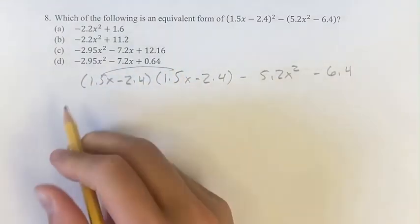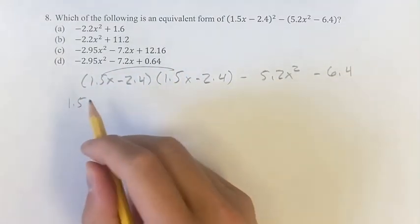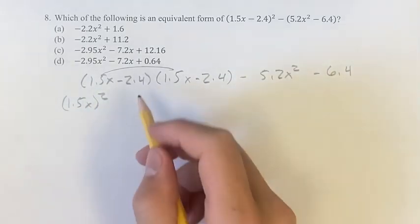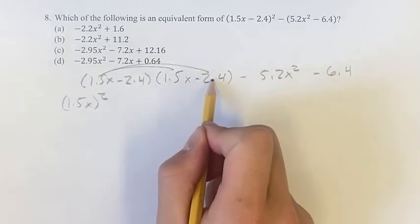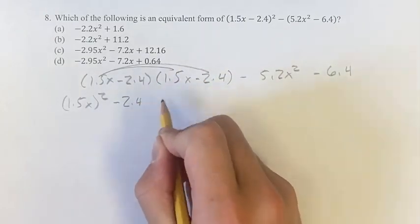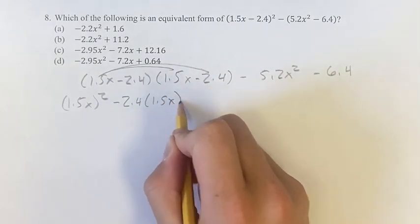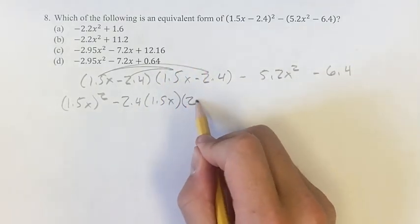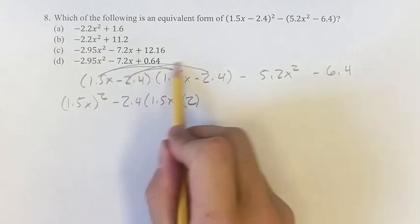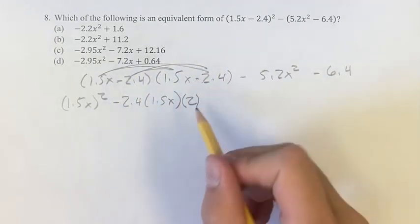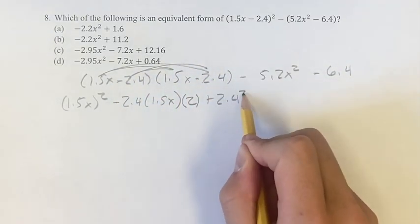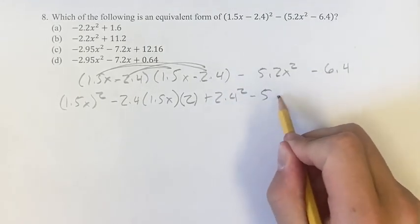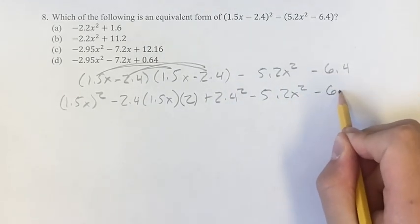So distributing out, we have 1.5x times 1.5x to 1.5x squared minus 2.4 times 1.5x minus another 2.4 times 1.5x. So we can just say this is times 2 of that. So minus minus is plus 2.4 squared. And then we have minus 5.2x squared minus 6.4.